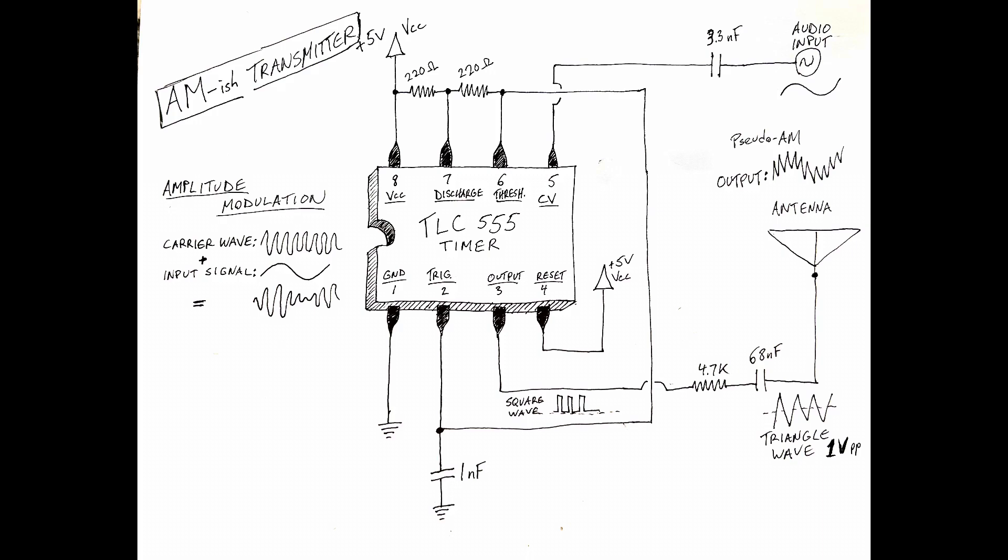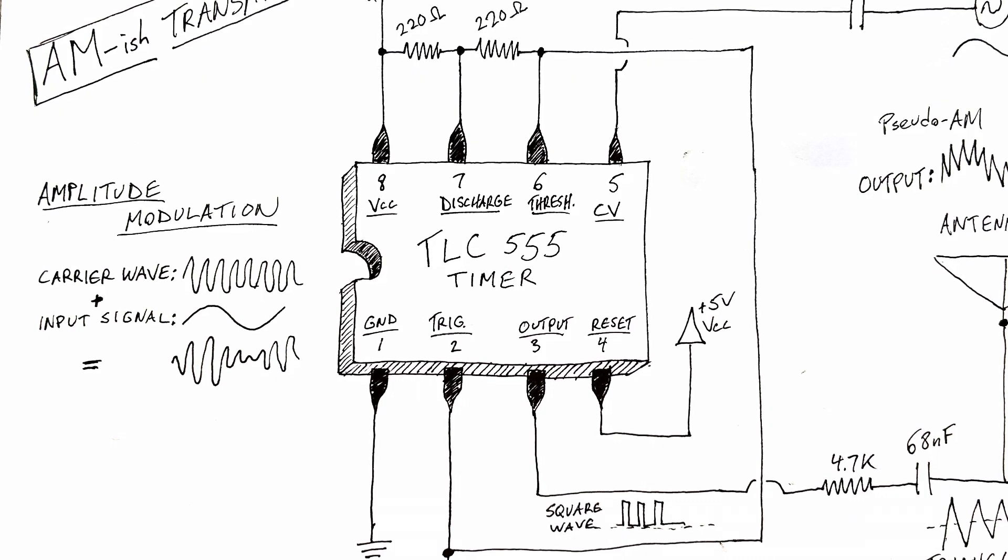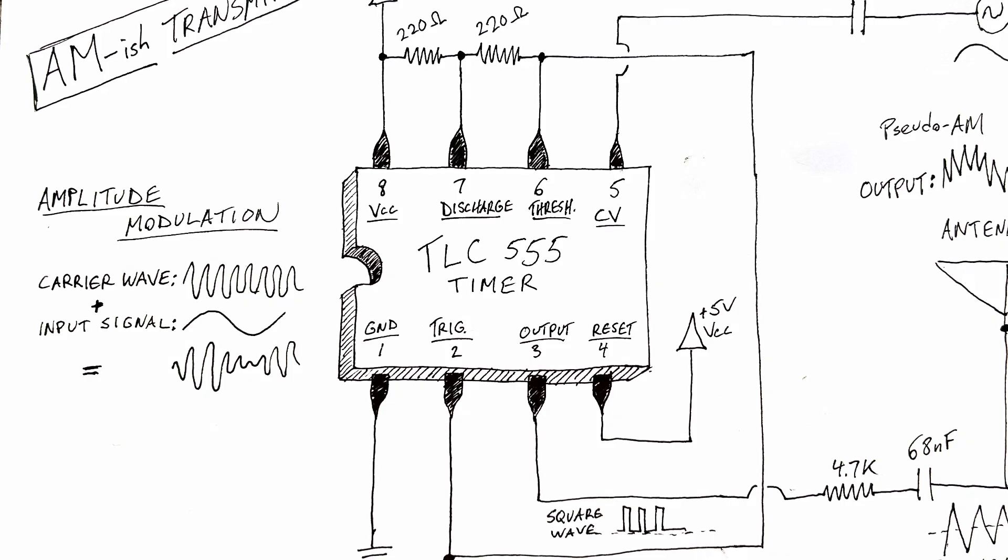The low-pass filter converts it to a triangle wave. The triangle wave modulates better than a square wave in this case, and it doesn't require a sine wave to do this.